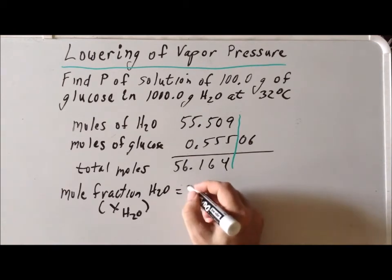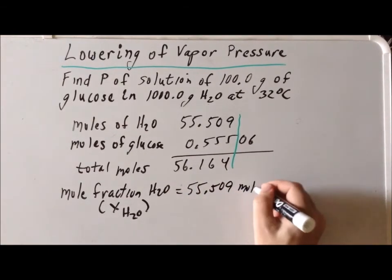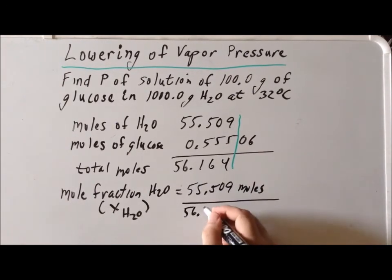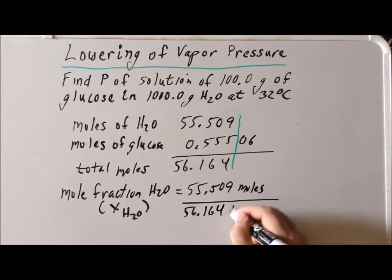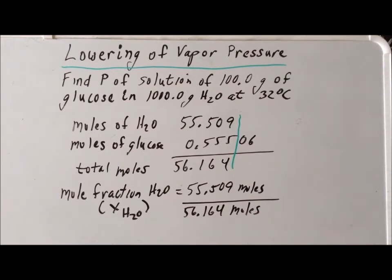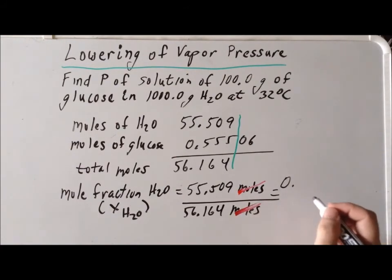We have 55.509 moles divided by 56.164 moles. Since we can cancel the units of moles top and bottom, we notice that we end up getting a unitless answer, which is exactly what we want. When we do that, we get a mole fraction of 0.988.